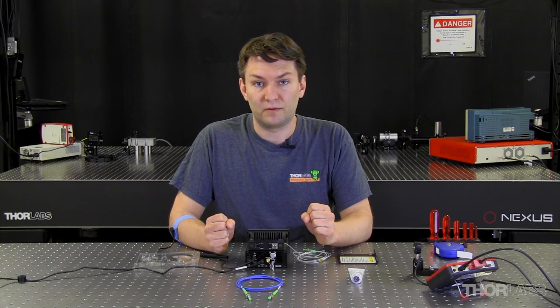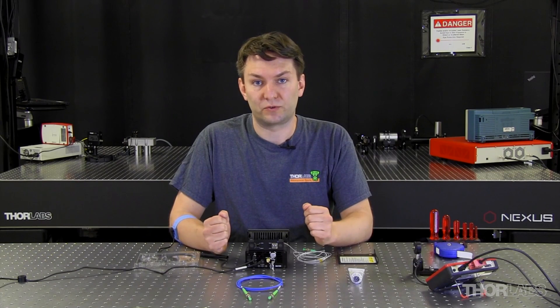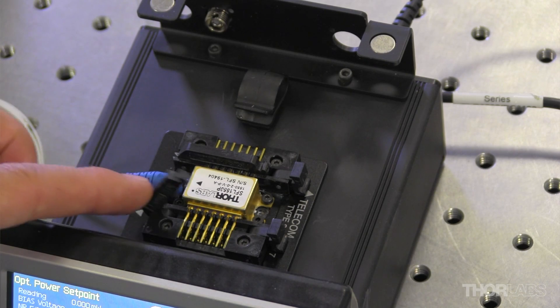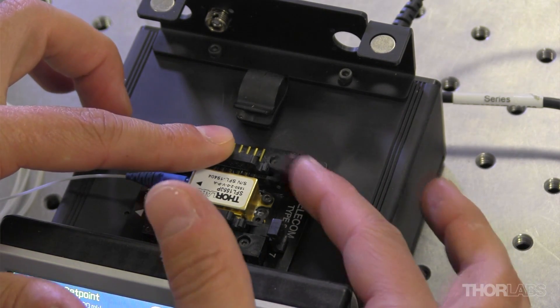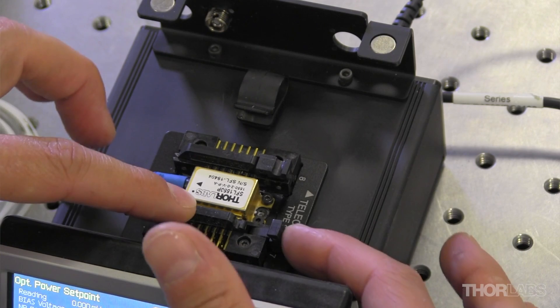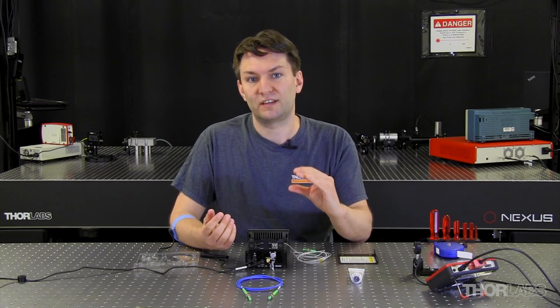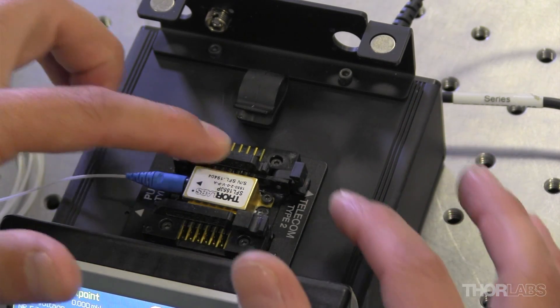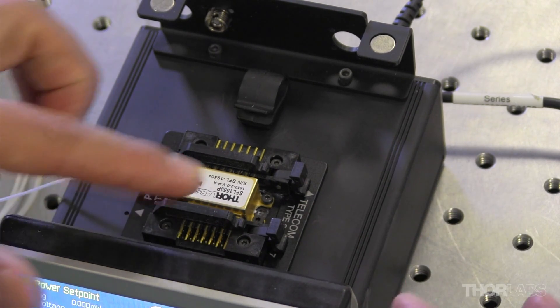Now that the laser is screwed down, I'm going to secure the electrical connections. So I'm going to drop the lever down on top of the pins and apply the lock. Now one thing to note is that once the lock is applied, the pins are actually pressing up on that lever. So when you want to remove the butterfly package later, it might be a little difficult to remove the lock. So in order to loosen it, sometimes I'll press down on that lever and pull the lock apart.